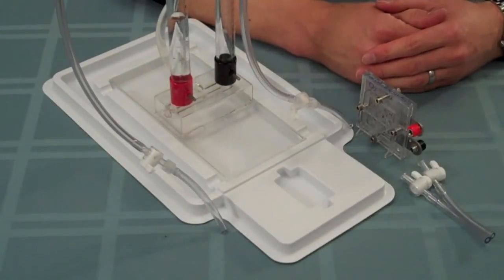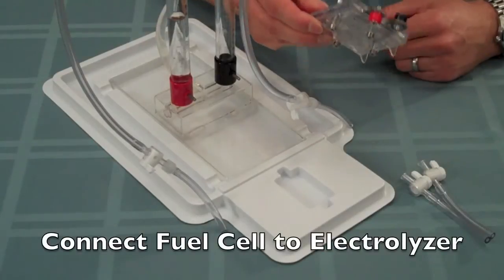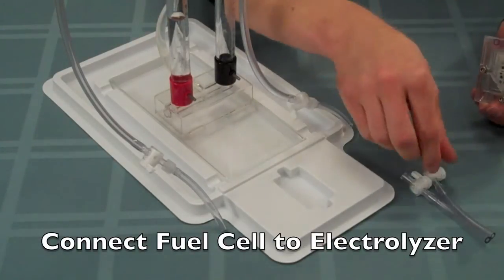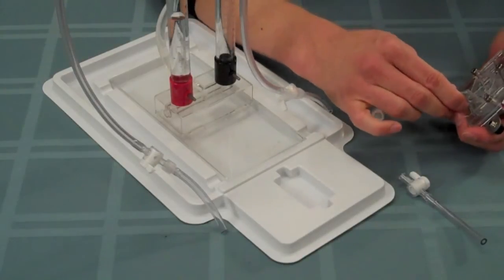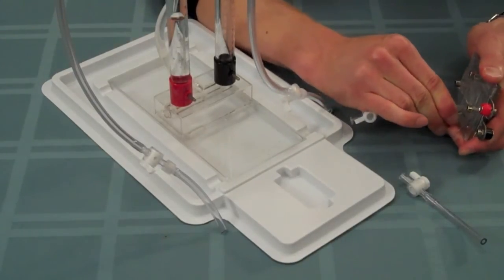If there are no leaks in the system, we can go ahead and connect the fuel cell to the electrolyzer. Start by taking these short purge valves and connecting them to the bottom ports on both sides of the fuel cell.